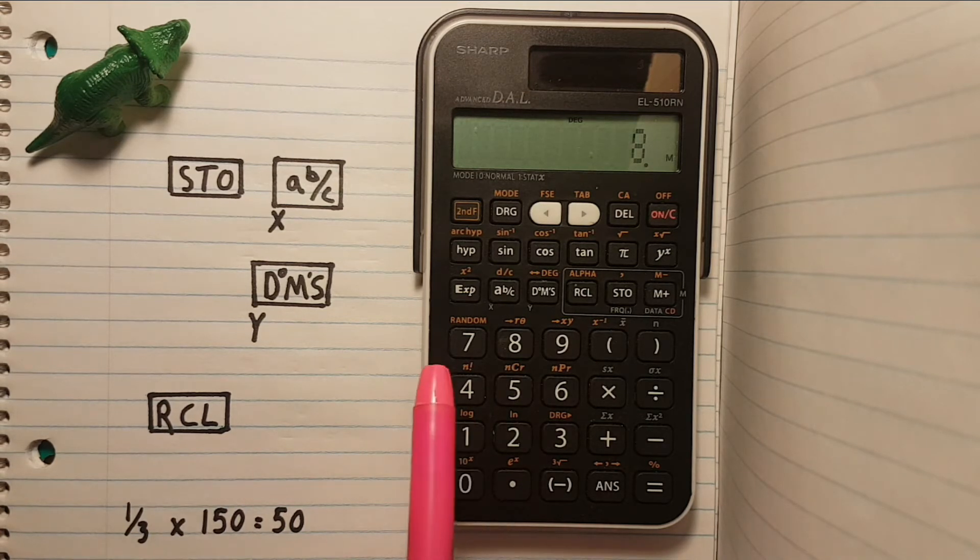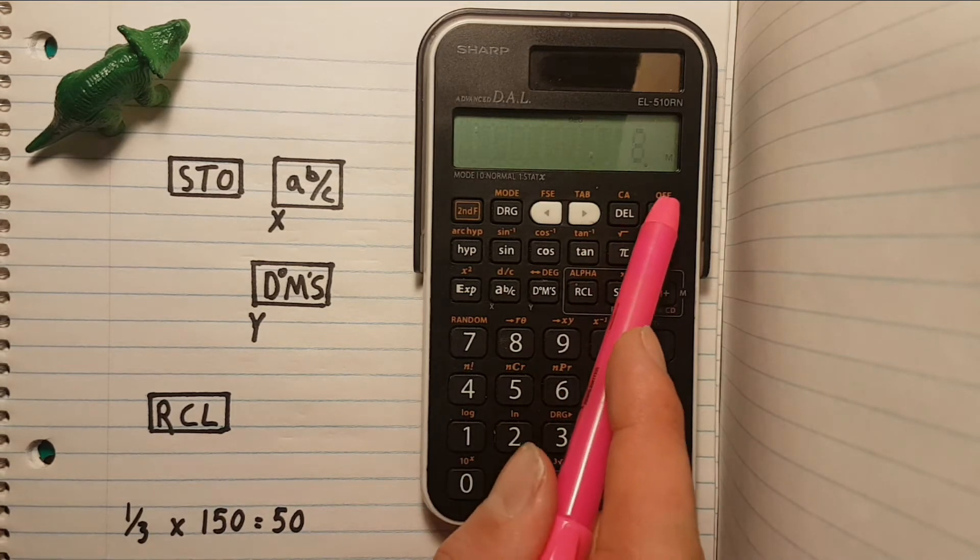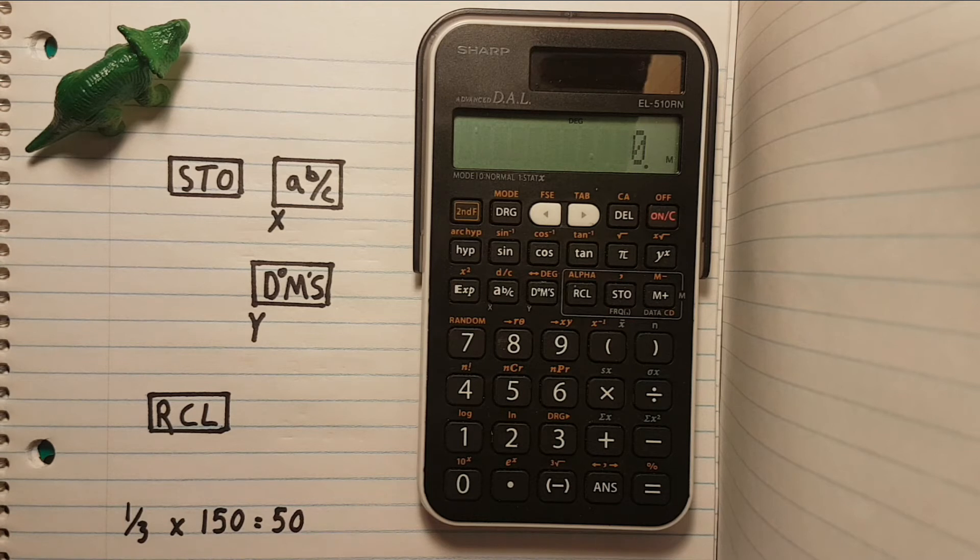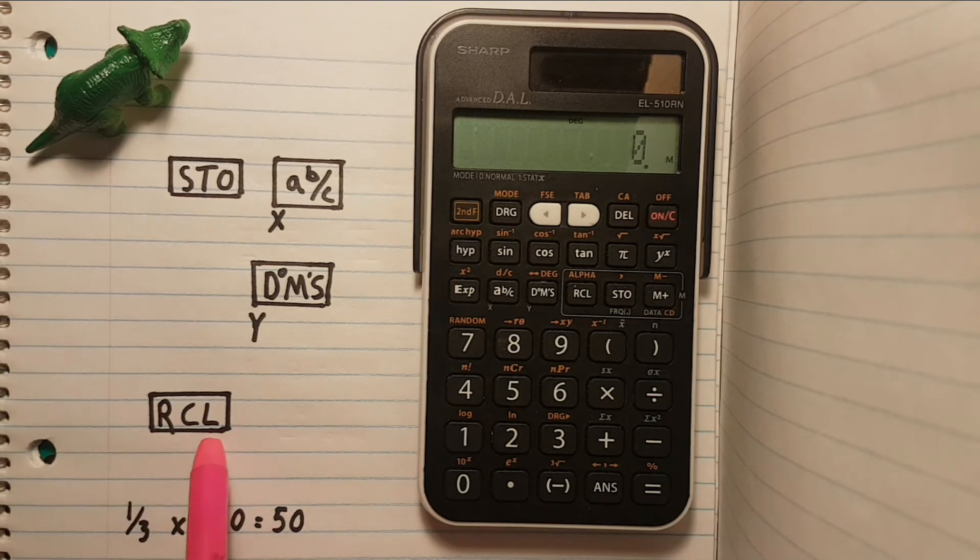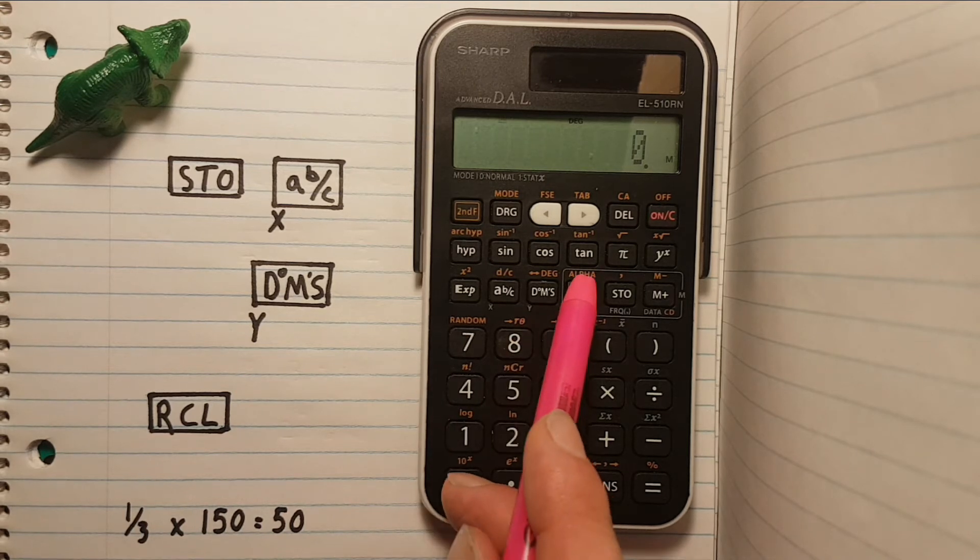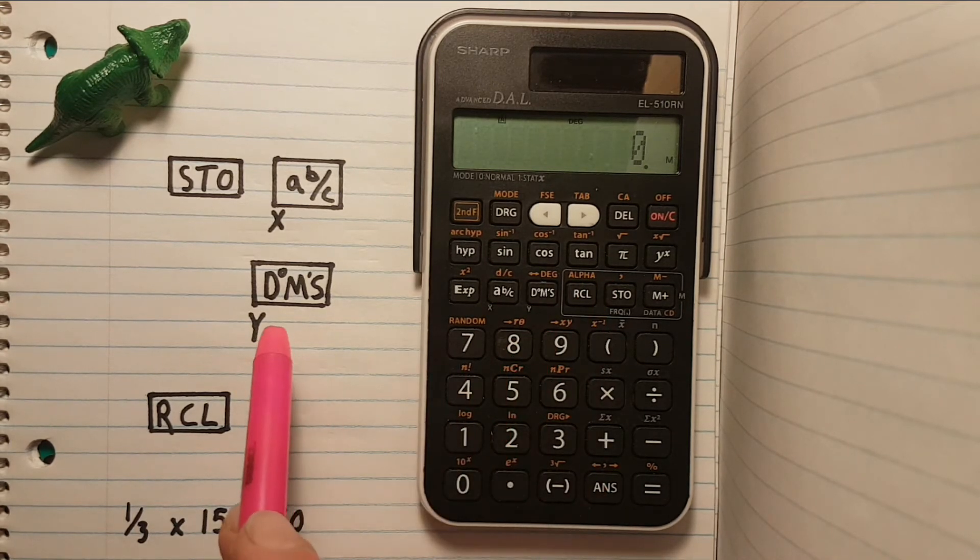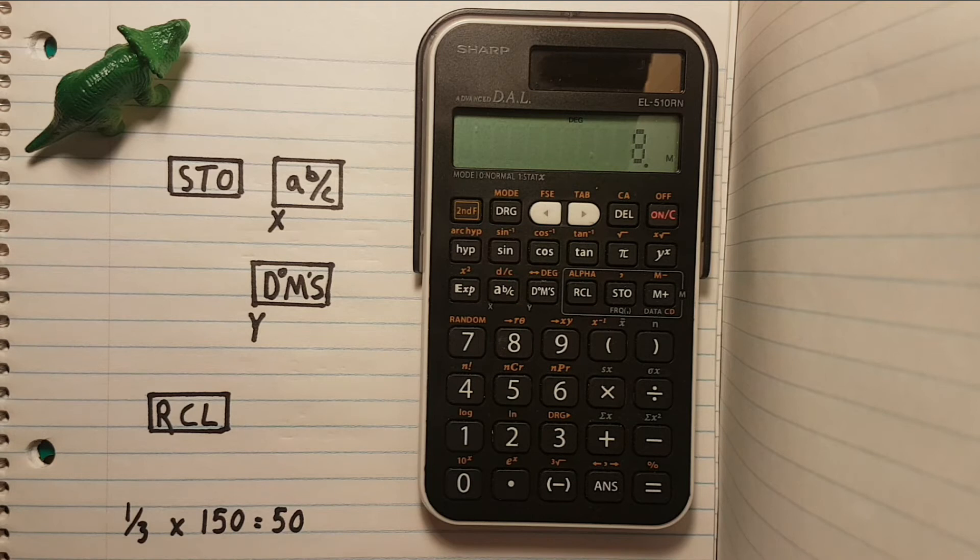This variable is now stored, so if we clear the screen and wish to recall this number we press the RCL key here and then the variable, and our number is back on the screen.